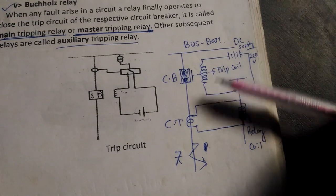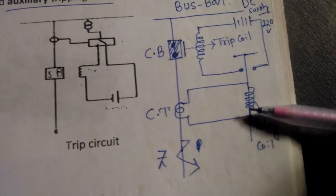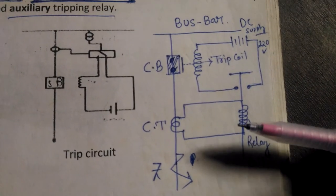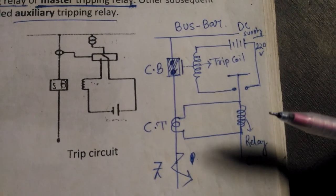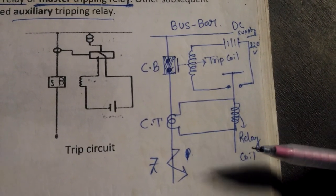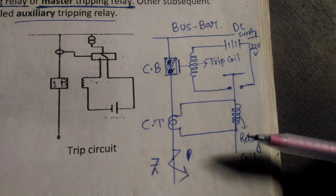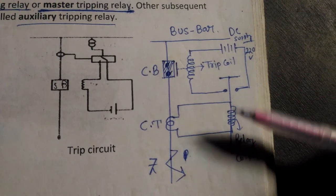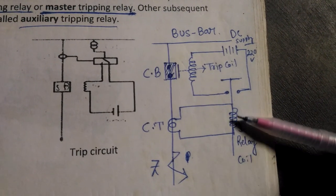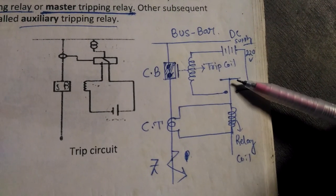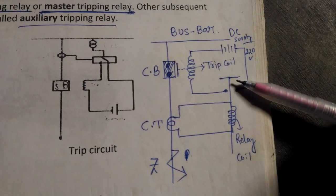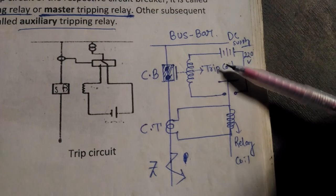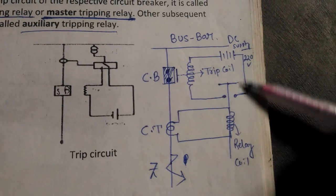This is the total pictorial representation and an easy procedure to remember how the relay operates, how it is connected to the CT, and how the relay coil is connected to the trip circuit.